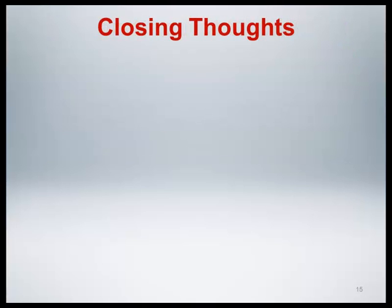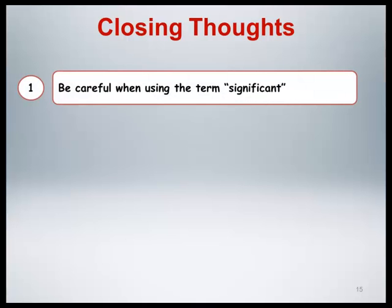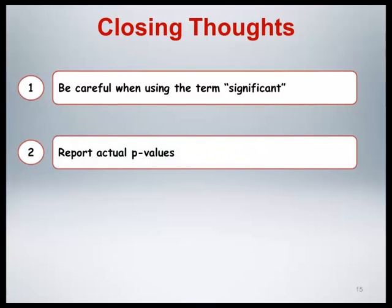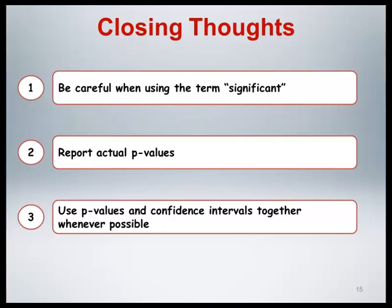Here are a few closing thoughts. First, be careful when using the term significant. Because of the common confusion between statistical significance and scientific importance, it is probably best to avoid this term when possible, and when using it, clearly distinguish between statistical significance and clinical significance. Second, report actual p-values, as this provides the reader with full information about the strength of evidence against the null hypothesis and allows them to apply their own alpha criterion. Third, use p-values and confidence intervals together whenever possible. The clearest presentations provide the most information to the reader, and if both are presented together, there is often little need for extraneous significance language. This concludes our discussion of hypothesis testing and statistical significance.